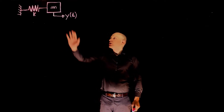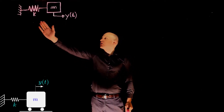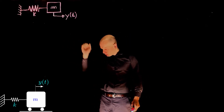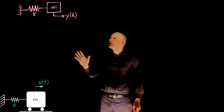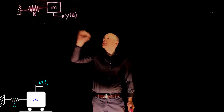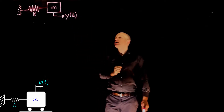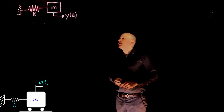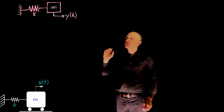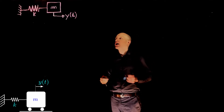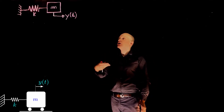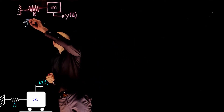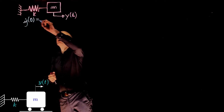Here we have a mass-spring system where the mass is connected to the spring, which is connected to a fixed point. The question is: if the mass is released from rest when the spring is stretched by alpha units, calculate the time response of the mass displacement, called y. There are two key points. First, the mass is released from rest, so the initial speed is zero. We can write that ẏ at time zero equals zero.